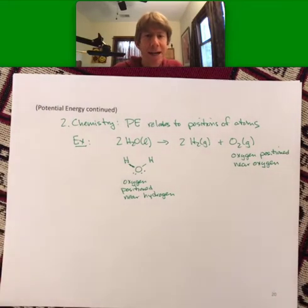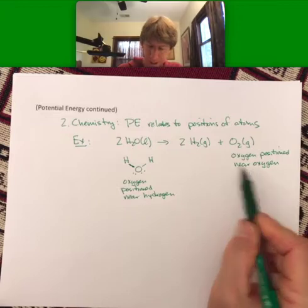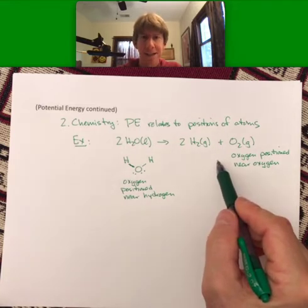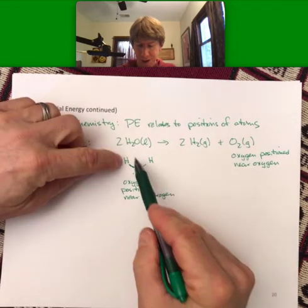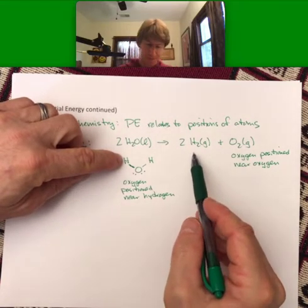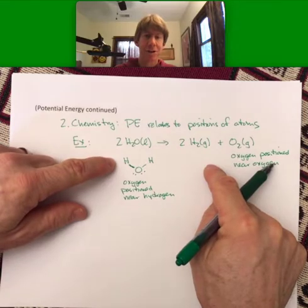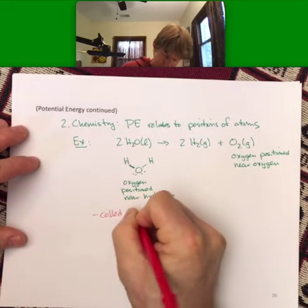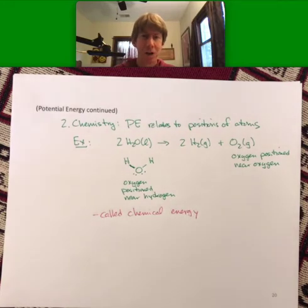We may not have any idea about whether the potential energy decreases as you go from reactants to products or whether it increases, but we know that when the position changes, we should expect a change in potential energy. The same thing can be done for the hydrogens. The hydrogens are near oxygen and the hydrogens are near other hydrogens. Lots of potential energy changes. This potential energy of reactions is oftentimes called chemical energy. At its heart, if you were a physicist, you might say it's all just potential energy.